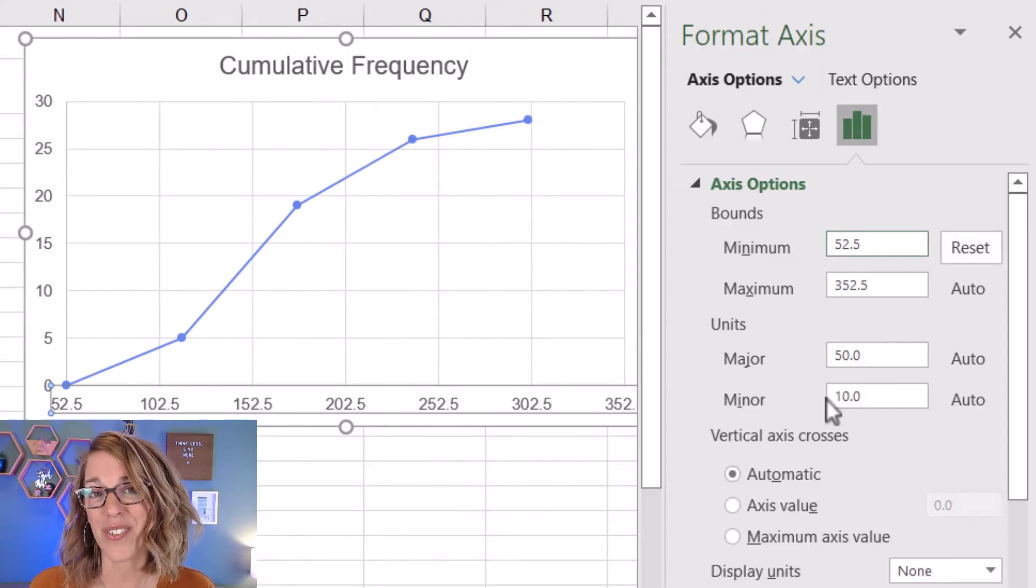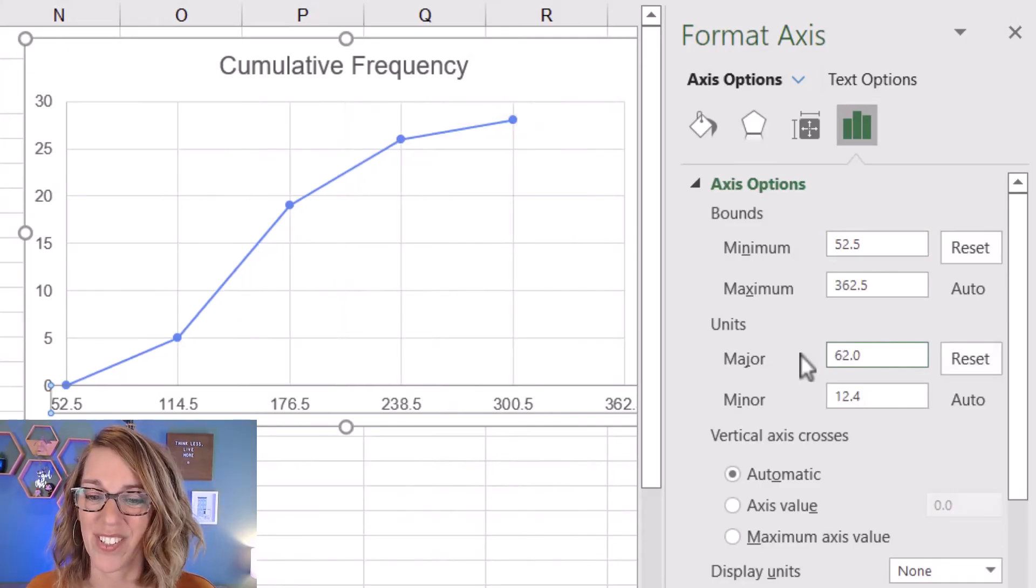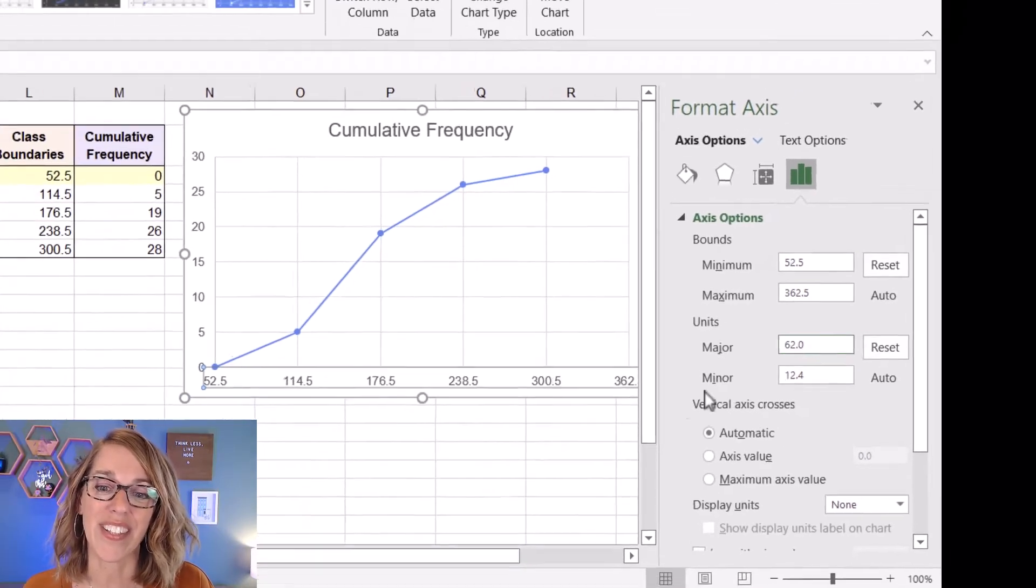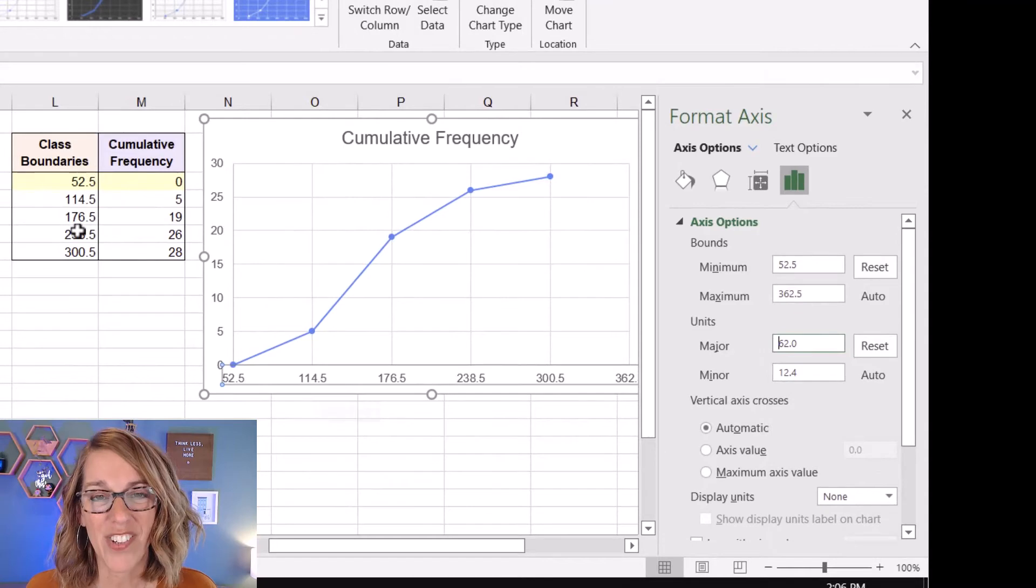What I really want to do is to change the units. So right now my major units go in 50s, but I want them to go every 62, which is my class width. So I'm going to go ahead and put a 62 here. And now you'll notice that my labeling along that horizontal axis matches the class boundaries in my chart.